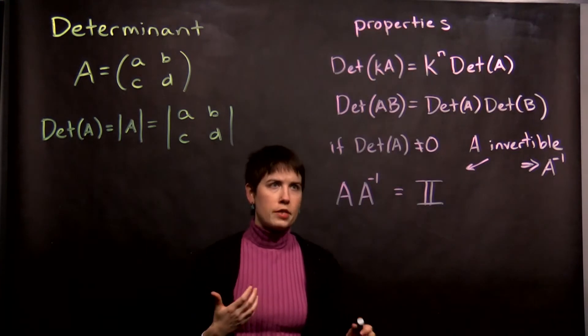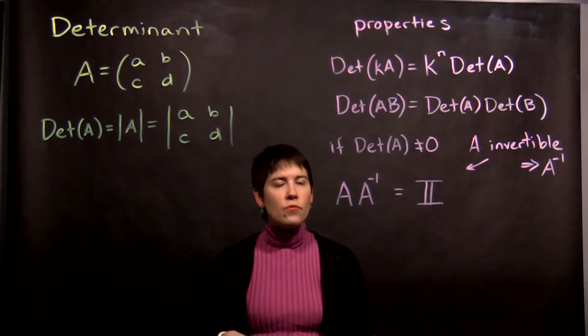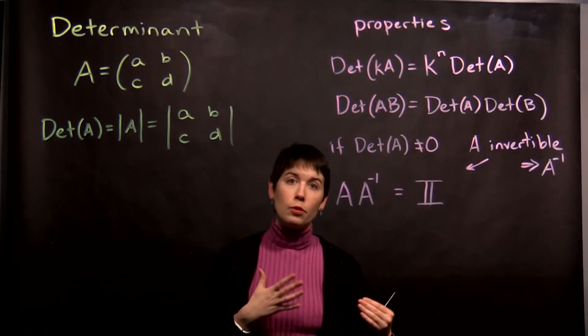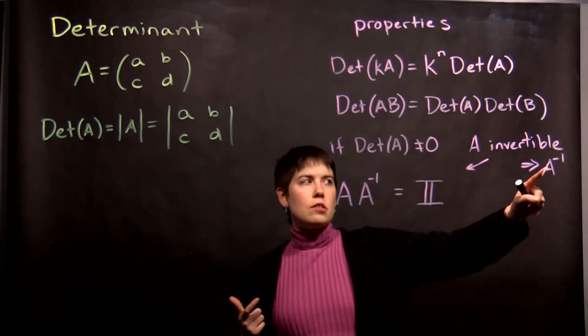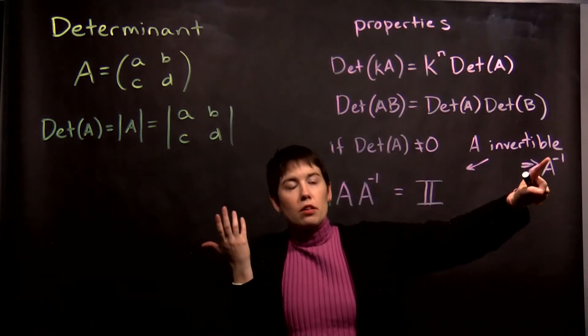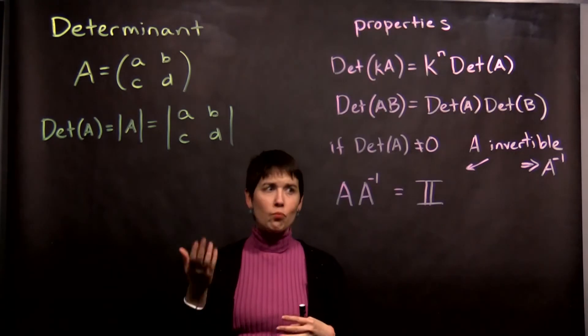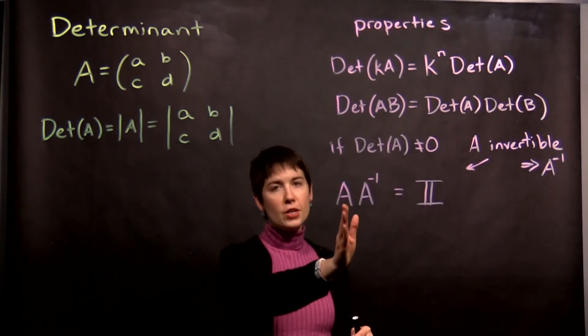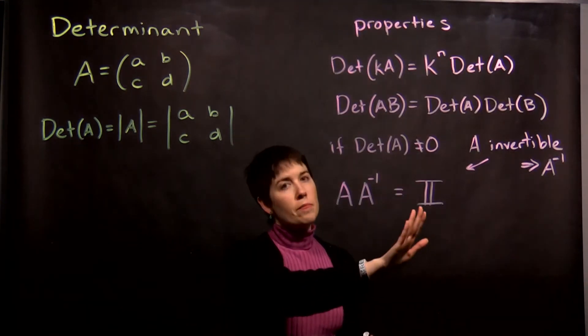Lastly, this is also quite important, is that if the determinant is not equal to 0, that tells us that A is an invertible matrix. Now how we write the inverse of A is A exponent negative 1, just as you would write the inverse of 2 or something. And the definition is that a matrix A multiplied by its inverse gives you the identity matrix.